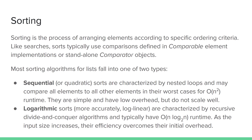Sorting is the process of arranging elements in a collection according to some specific ordering criteria. Like searches, sorts typically compare elements using either the compare-to method of comparable objects or the compare method of a standalone comparator. Most general-purpose sorting algorithms for linear data structures fall into one of two categories. Sequential sorts, or quadratic sorts, are characterized by comparing all elements to all other elements in a nested loop, resulting in O(n²) runtime. They're simple to understand and have very low overhead, so they may be appropriate for sorting small datasets, but they don't scale well.